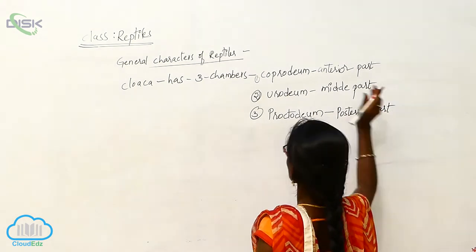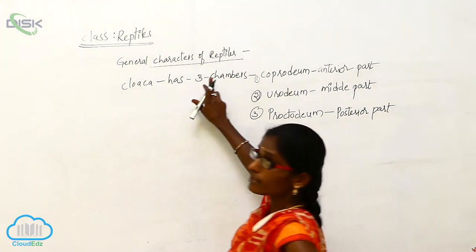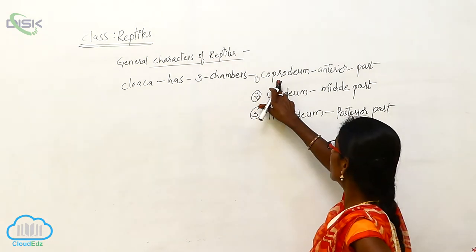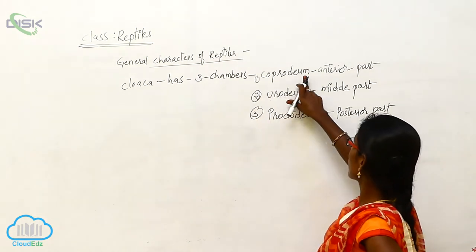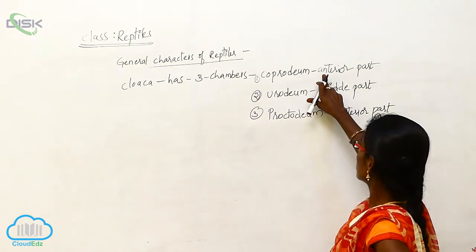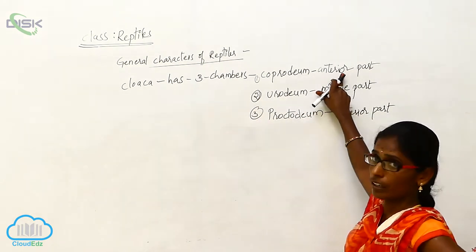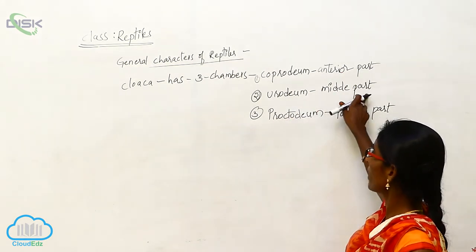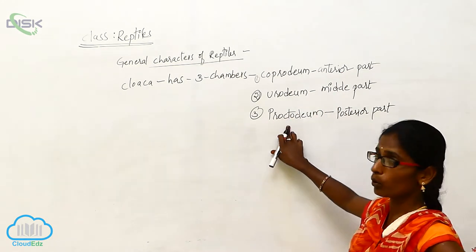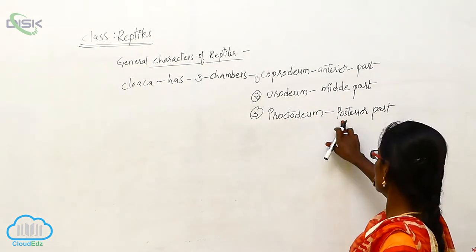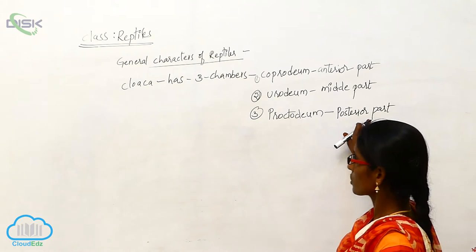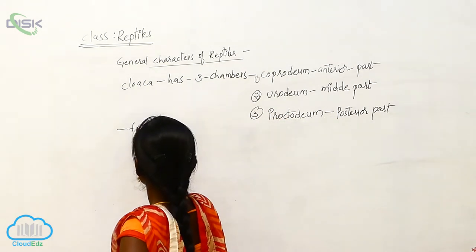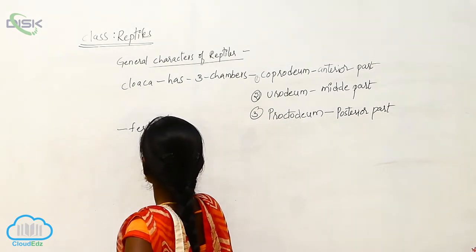So cloaca has three chambers: the coprodeum, which is the anterior part; the urodeum, which is the middle part; and the proctodium, which is the posterior part. And fertilization...